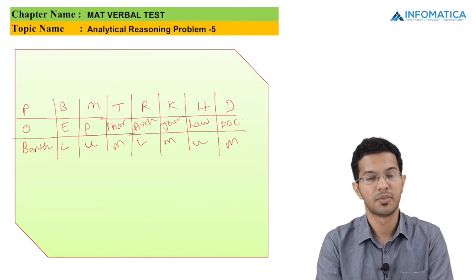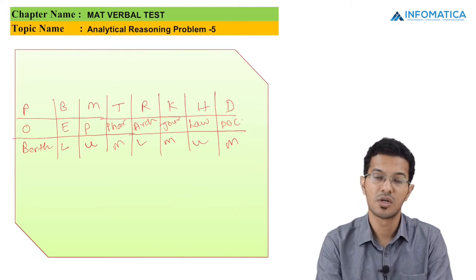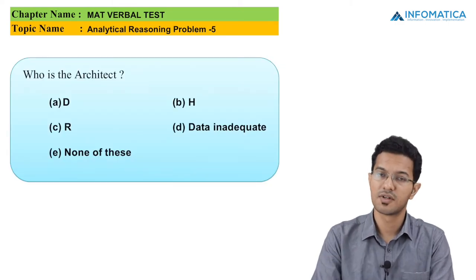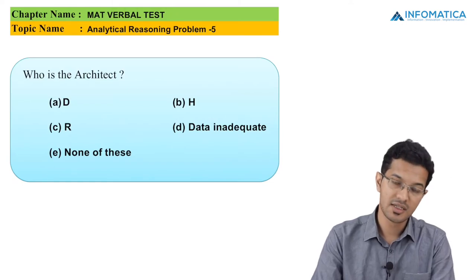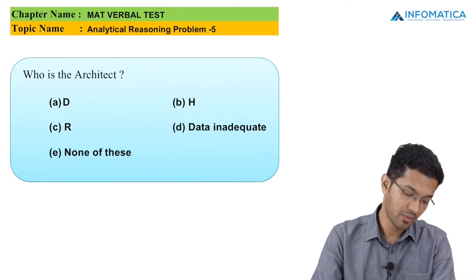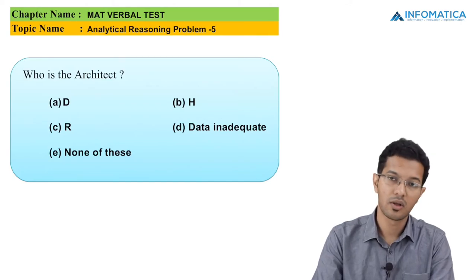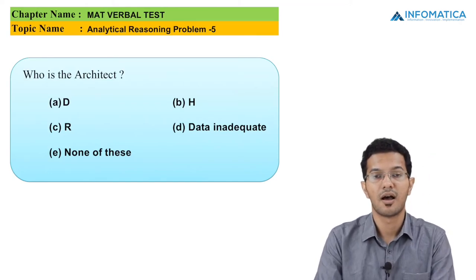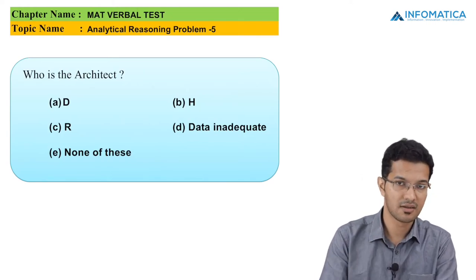Now let us go for the MCQs. Please take a screenshot of this table before proceeding. The first question asks who is the architect. Option A is D, option B is H, option C is R, or data inadequate. From the table, R is the architect, so option C is the correct answer.